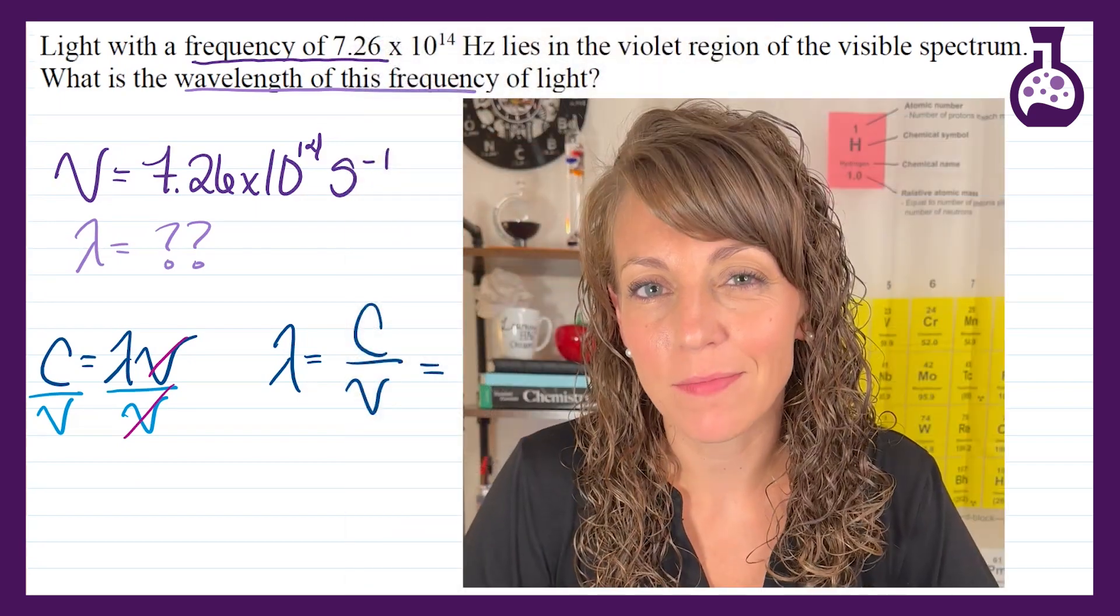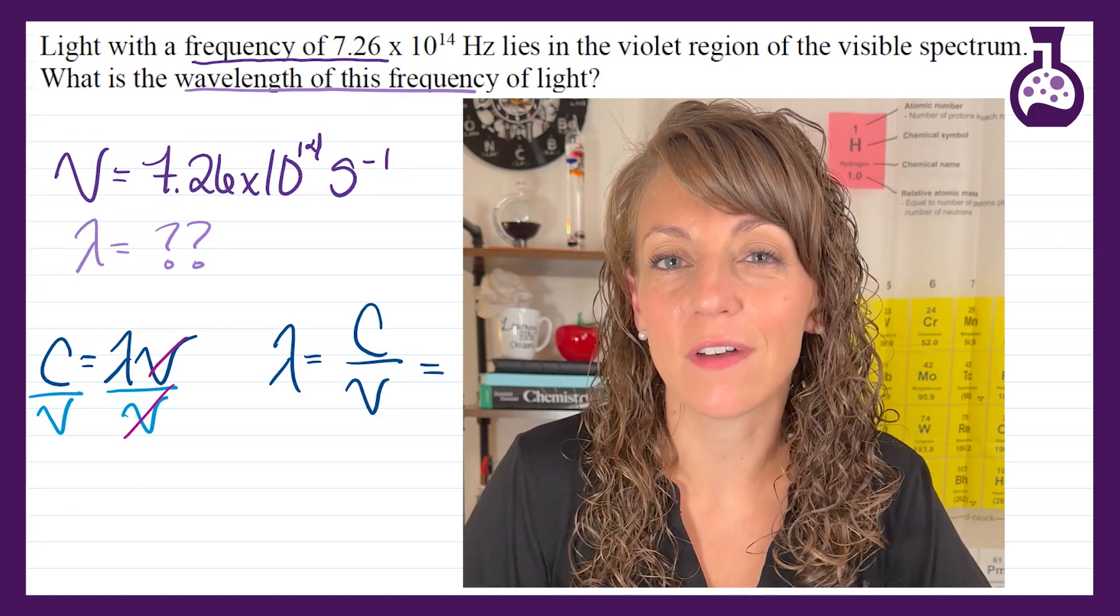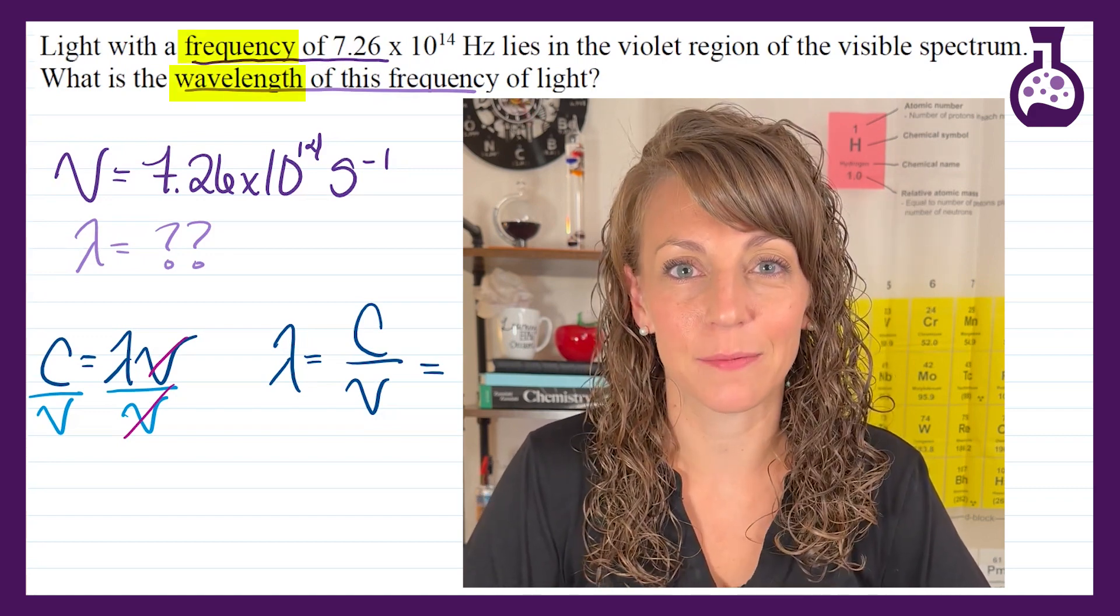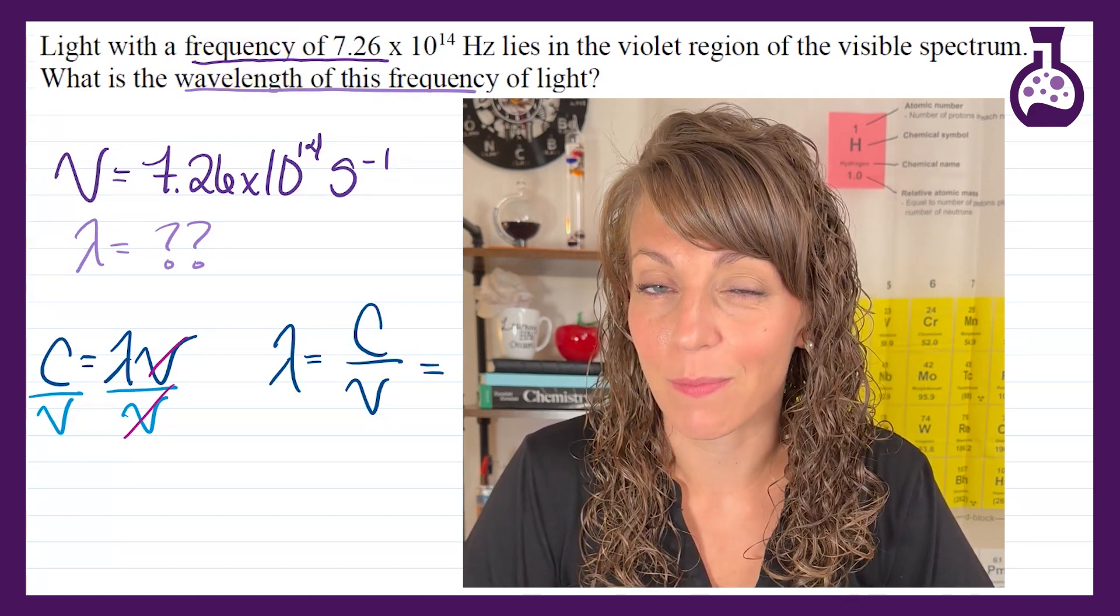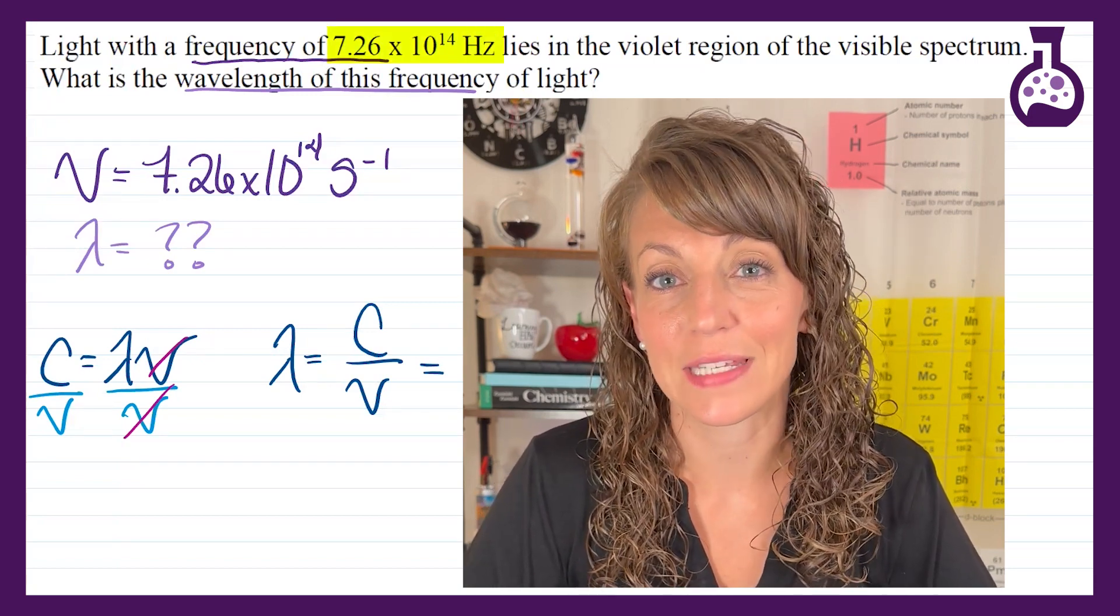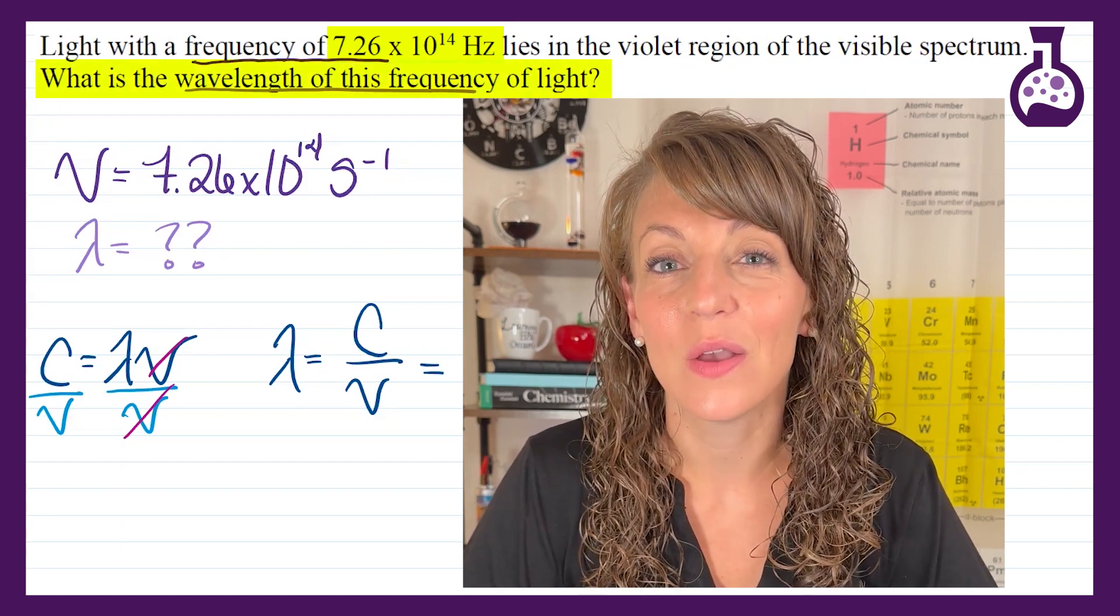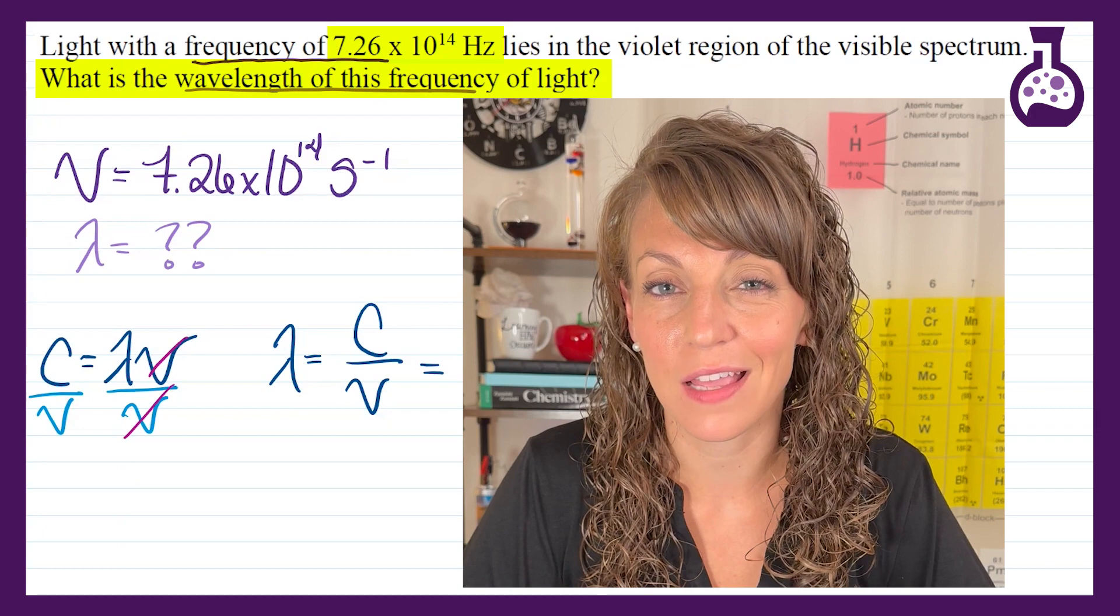One of the most common problems involving scientific notation in chemistry is one involving frequency and wavelength. In this particular problem they give us a frequency of 7.26 times 10 to the 14 hertz and ask us to solve for the wavelength associated with the frequency of light.